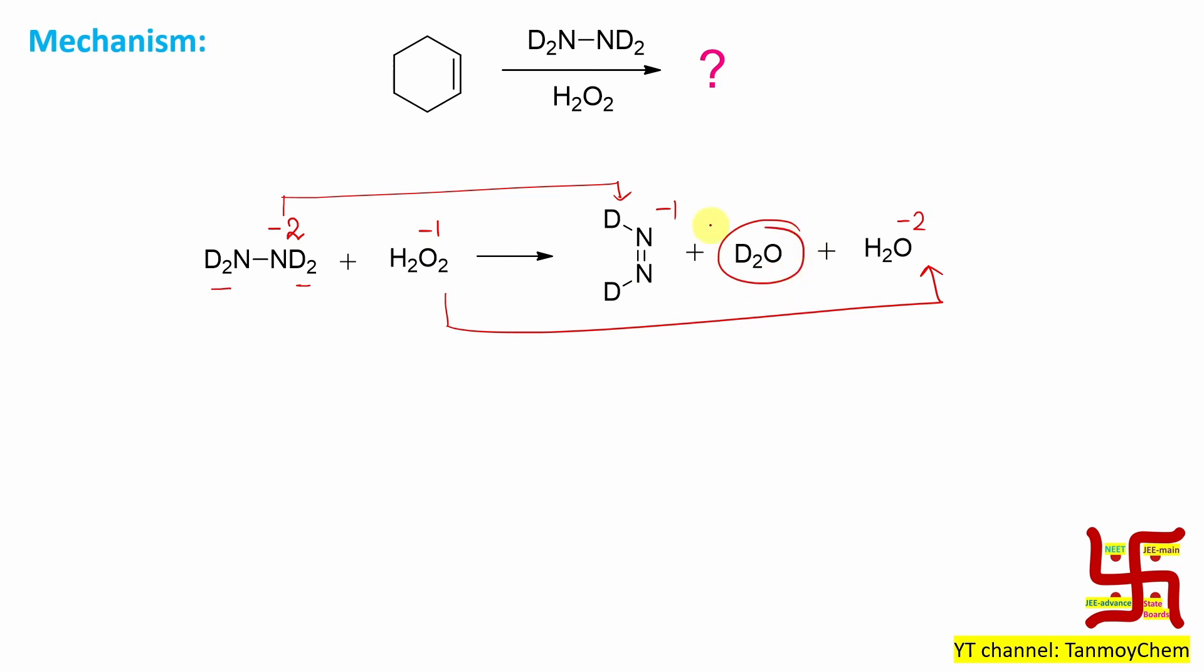By the way if you have any doubt regarding this redox concept, remember this. You have this nitrogen molecule N double bond N. After that if you reduce it it will produce this molecule. It is called deuterium diamide.